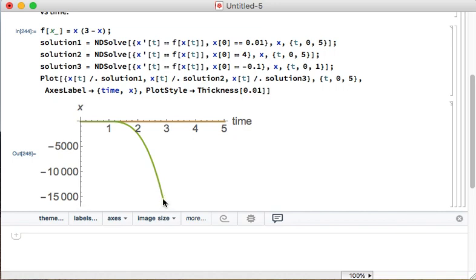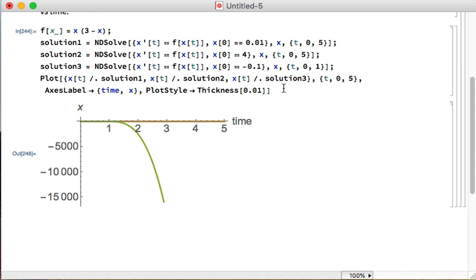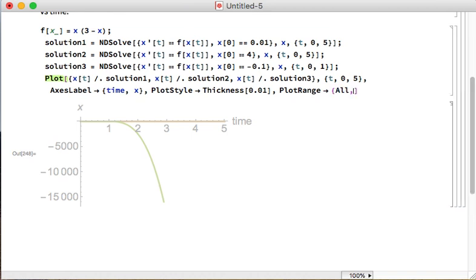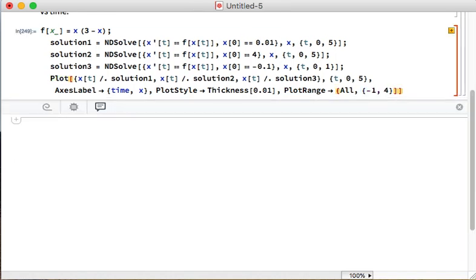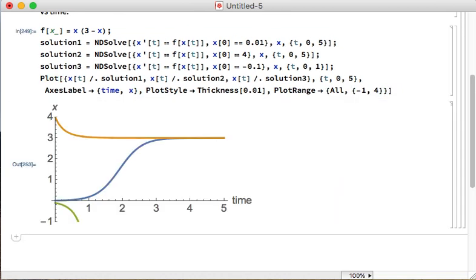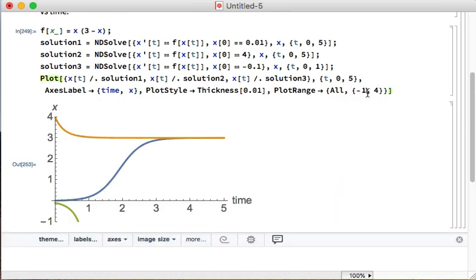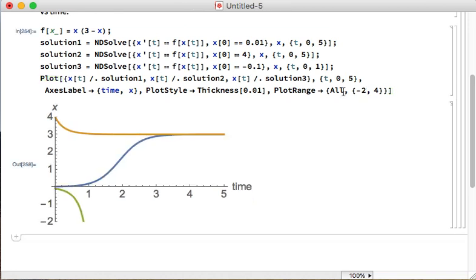And actually, it dropped to negative 15,000 within that time. And I don't want to see that. I want to be able to see the structure. So I'm going to add a plot range command. I still want all of time, but I want the vertical, the x, to just go from negative 1 to 4. Maybe negative 2, so that we can watch that decay.